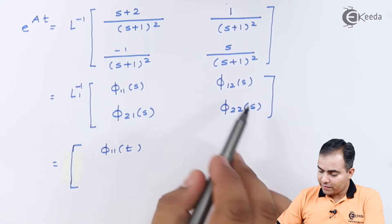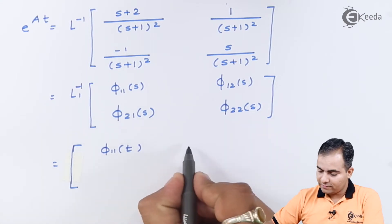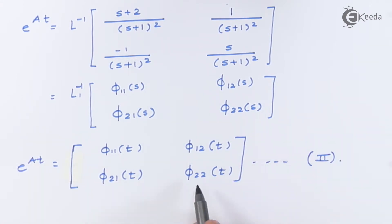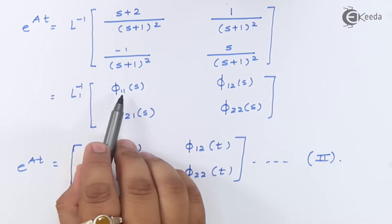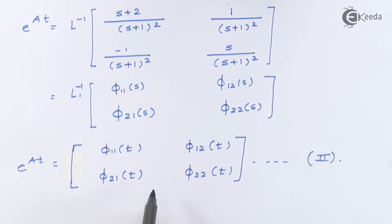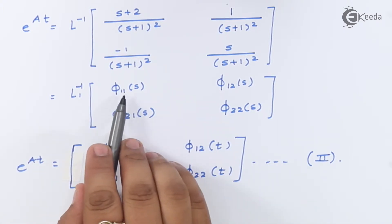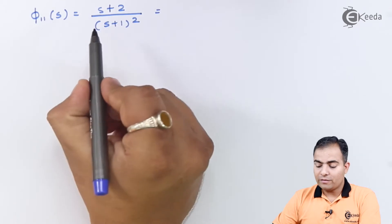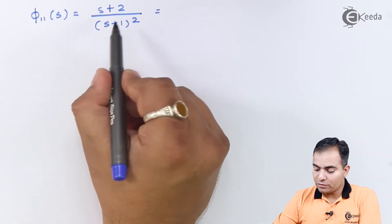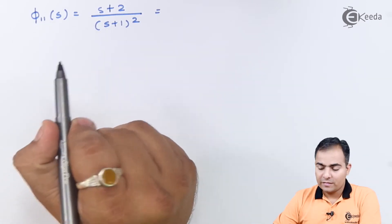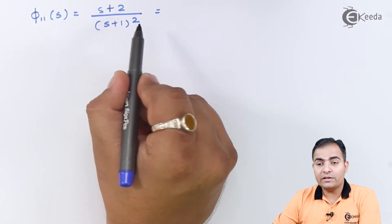We will find the Laplace inverse of each element and substitute into equation 2 (the state transition matrix) to get the final answer. First, we find L⁻¹{φ₁₁(s)}, where φ₁₁(s) = (s+2) / (s+1)². The denominator has two factors: (s+1) and (s+1)², so we use two partial fraction constants A and B.